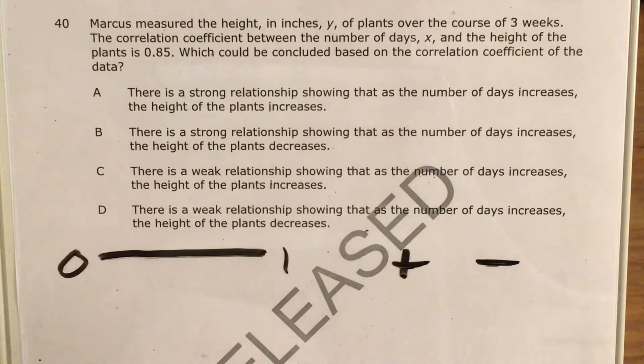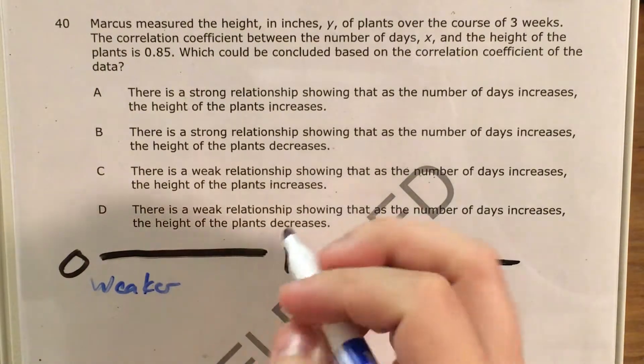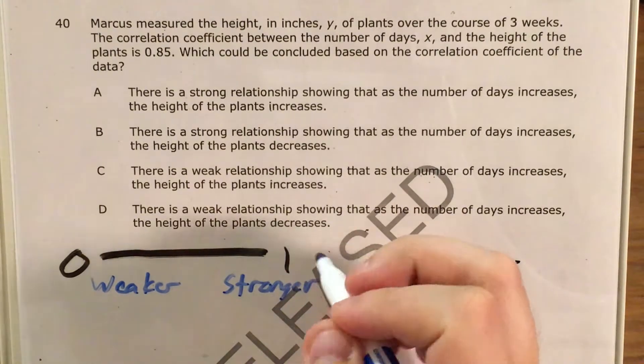Now when it comes to the actual number, any correlation coefficient is going to be somewhere between 0 and 1. We'll have an absolute value somewhere between 0 and 1. The closer it is to 0, that's weaker. If it's close to 1, that's stronger.